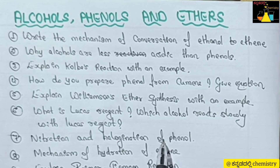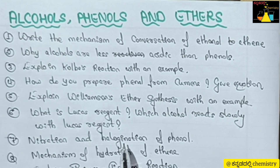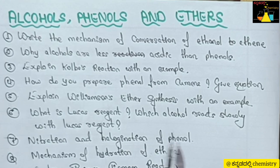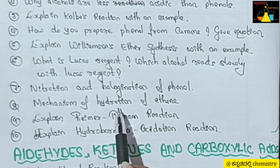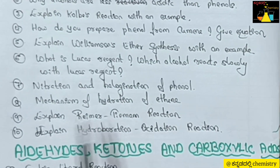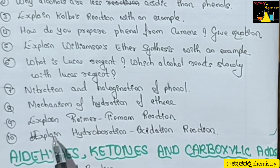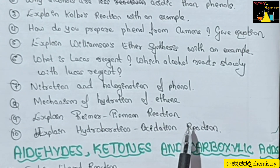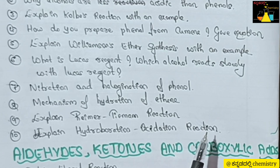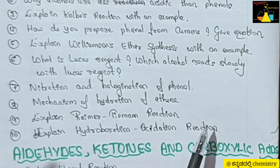Next, from Alcohols, Phenols and Ethers: nitration and halogenation of phenol are important, and the most important one is dehalogenation of phenol. Also important: the mechanism of hydration of ethylene, explain Reimer-Tiemann reaction, and explain hydroboration-oxidation reaction. These are the important questions from this chapter.